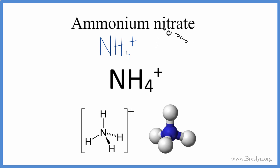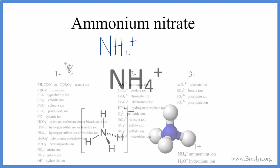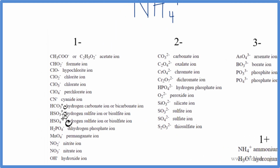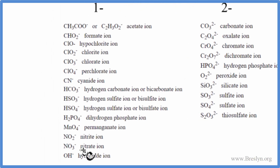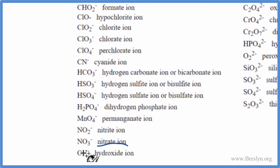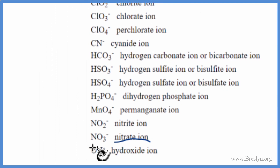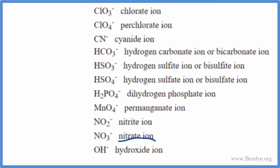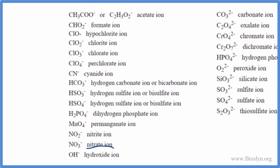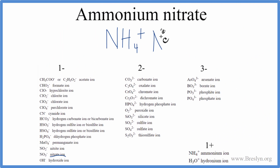Now we have to figure out the nitrate ion. That's also not on the periodic table, so let's go back to our chart. Down here is the nitrate ion — that is NO3-. So let's write that: NO3-.